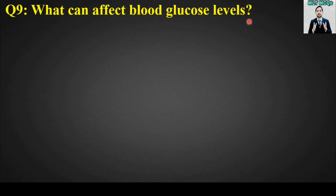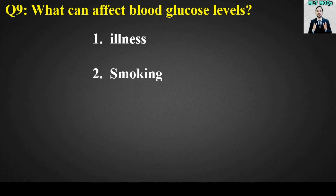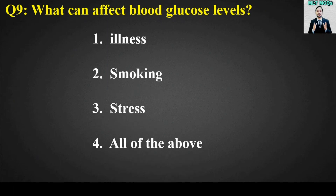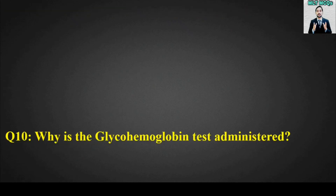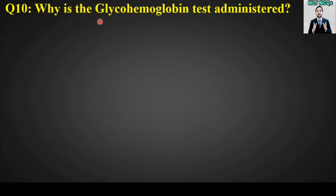MCQ number nine: What can affect blood glucose levels? Options are: illness, smoking, stress, or all of the above. The right answer is option four — all of the above. Illness, smoking, as well as stress can affect blood glucose levels.